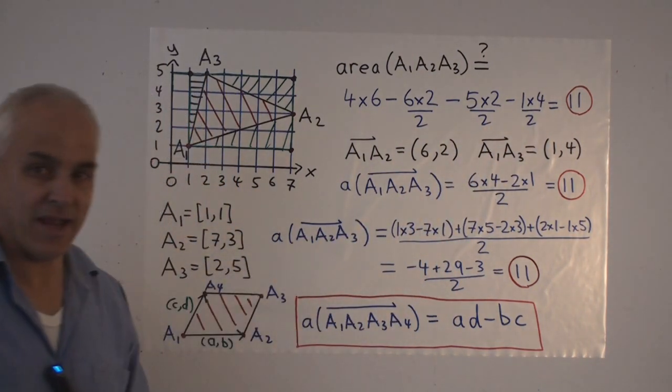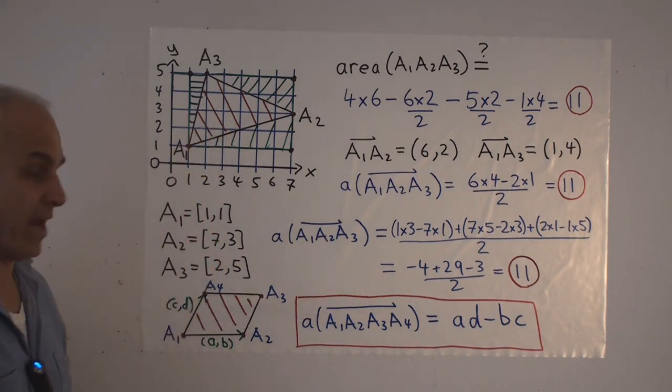When we calculate that out, we get 11 for the area of the triangle A1, A2, A3.